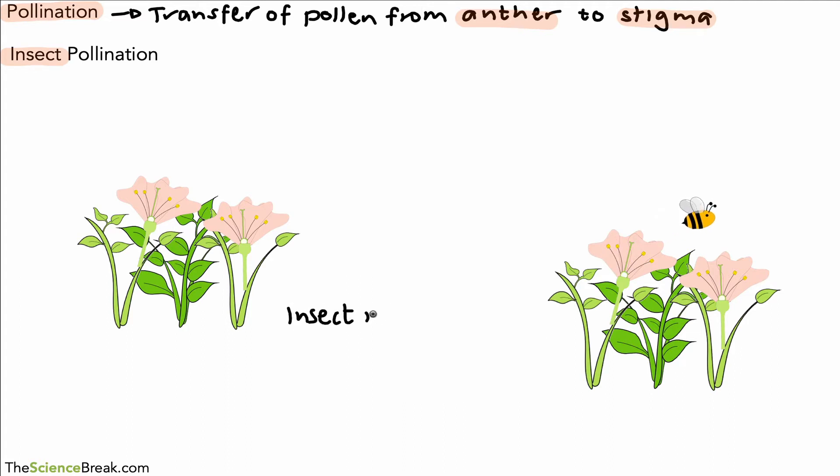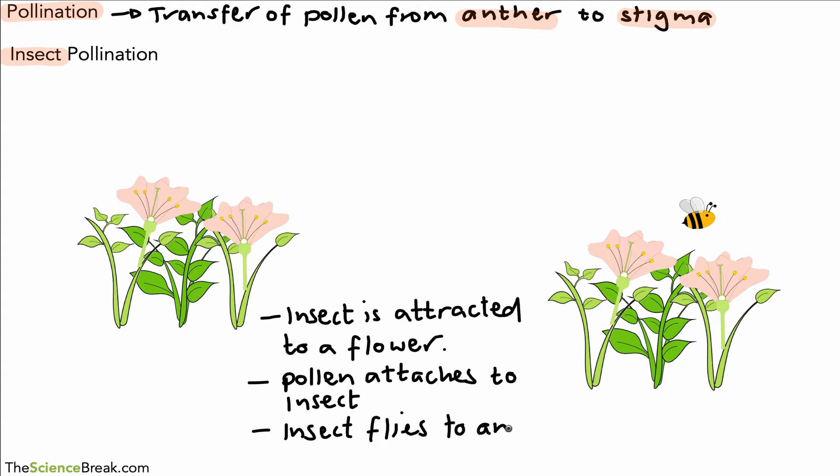We can summarize what happens: the insect is attracted to a flower by the scent, the smell, and by the presence of nectar. Once it gets there, the pollen attaches to the insect's body, and then the insect flies to another plant, another flower.